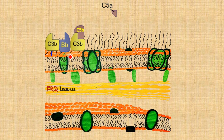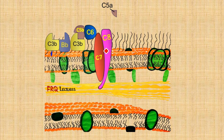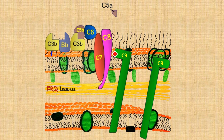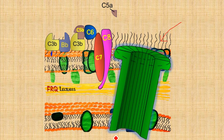From here, things become more straightforward. C5b begins recruiting other complement proteins in ascending order: first C6, then C7, and then C8. C7 and C8 are embedded deep into the bacterial membrane due to their unique hydrophobic regions, allowing them to penetrate the membrane.